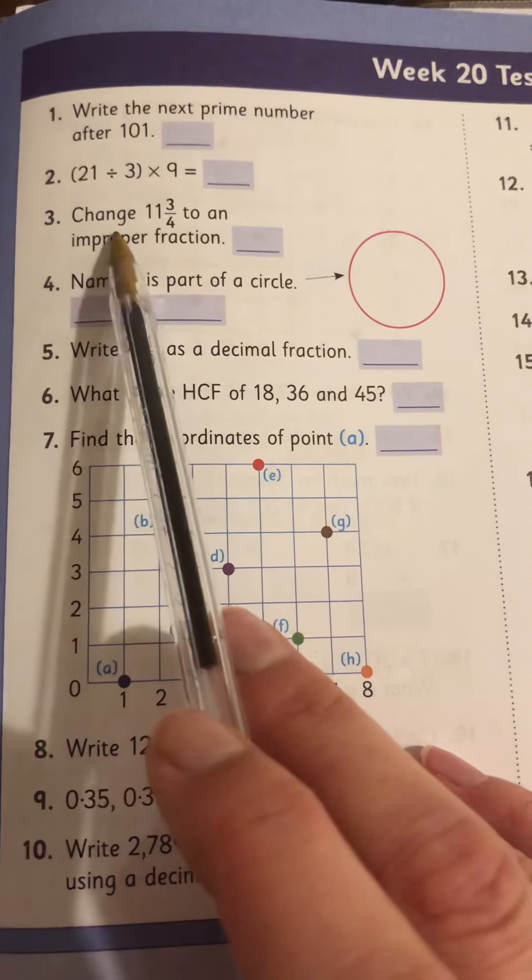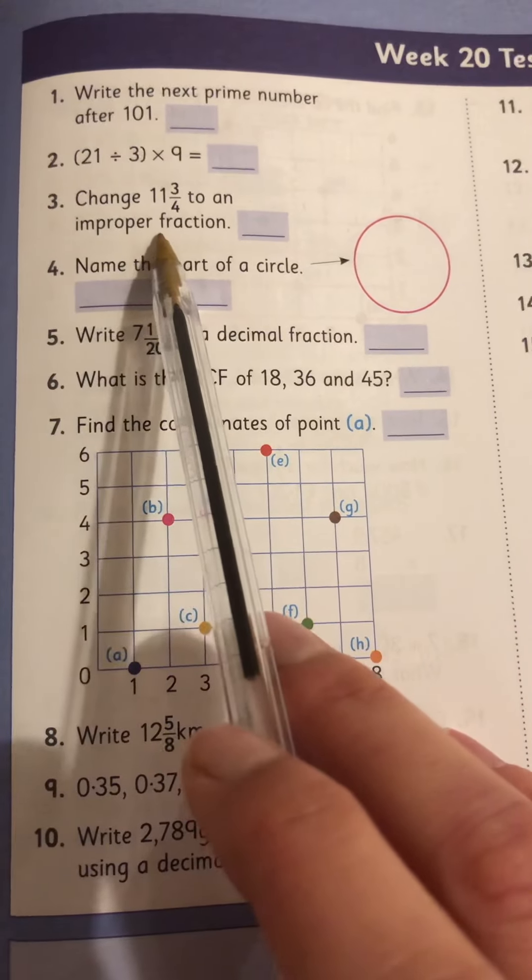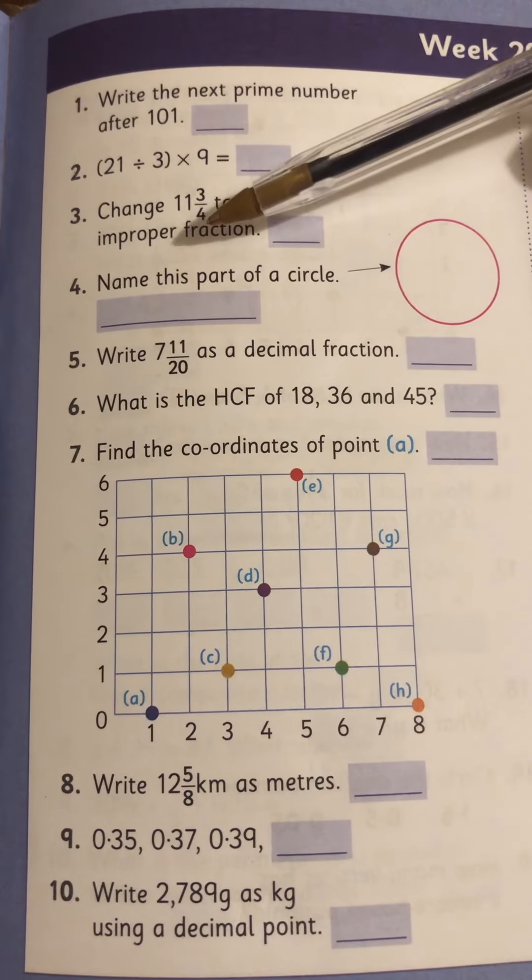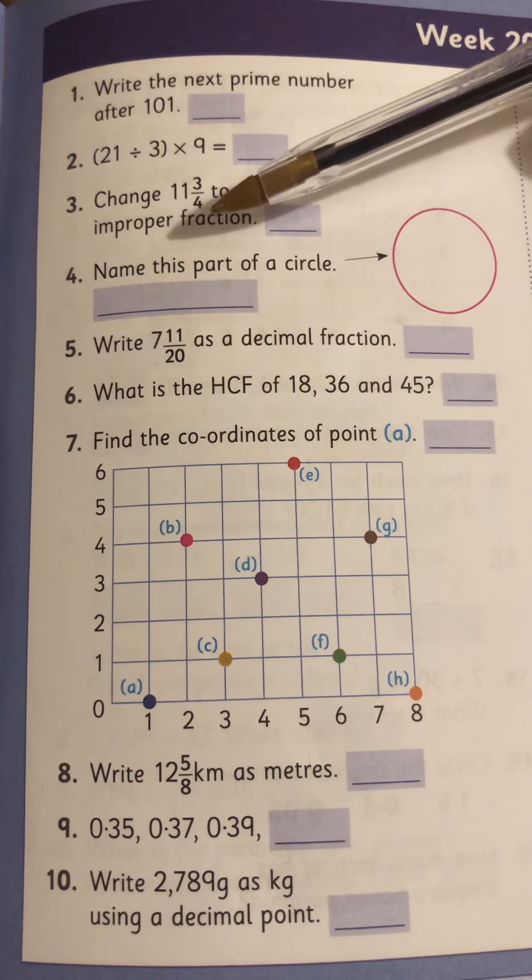Number 2, change 11 and 3 quarters to an improper fraction. So another word for an improper fraction is top heavy. So go this way, 4 by 11 plus 3 and it's all over 4.